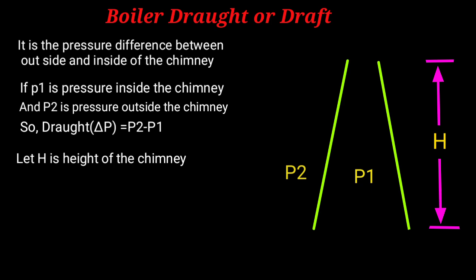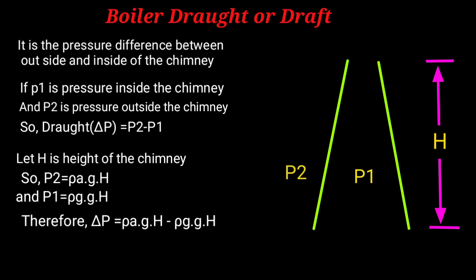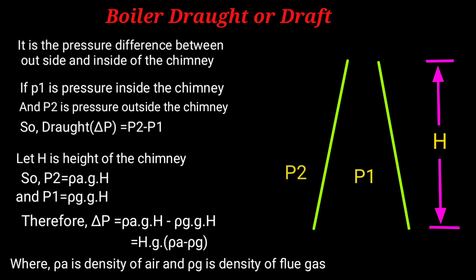Let H be the height of the chimney, so P2 equals ρa·g·H and P1 equals ρg·g·H. Therefore, ΔP equals ρa·g·H minus ρg·g·H equals H·g(ρa minus ρg), where ρa is density of air and ρg is density of flue gas.